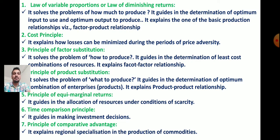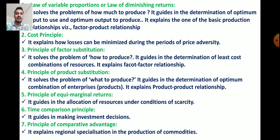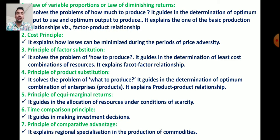The cost principle explains how losses can be minimized during periods of price adversity. The third principle, factor substitution, solves the problem of how to produce. It guides the determination of the least cost combination of resources and explains the factor-factor relationship.